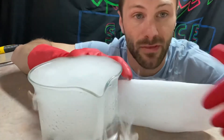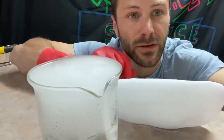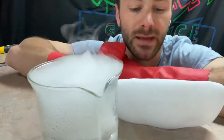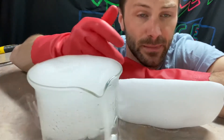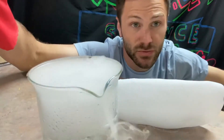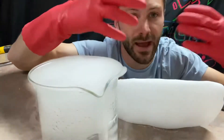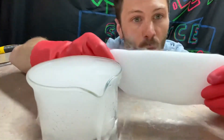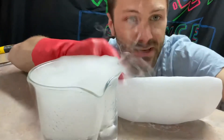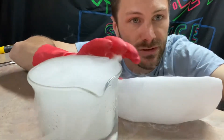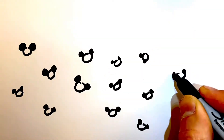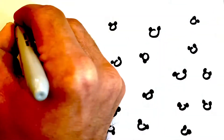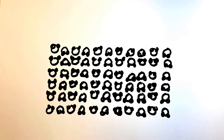Dry ice is just carbon dioxide in solid form. The molecules in a solid are really, really close together. But when you add thermal energy — energy that's in this room, the heat that's in this room — it's going to warm this thing up. If this gets warm enough, the molecules are going to start moving and spread apart. So all dry ice is, is a gas, carbon dioxide, that's gotten so cold it's turned into a solid.